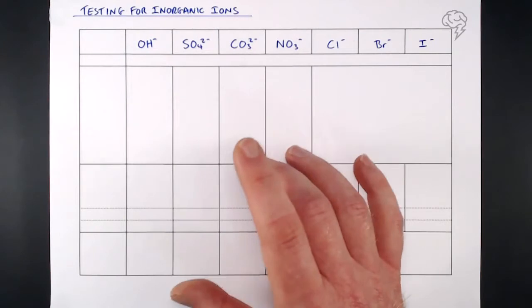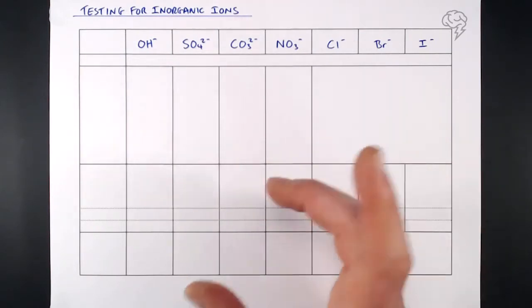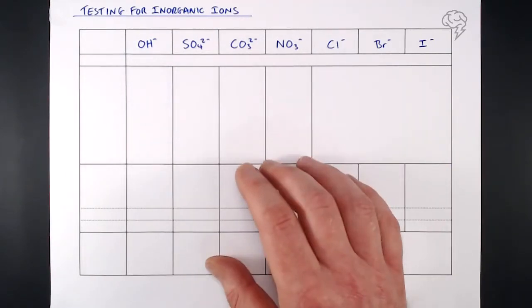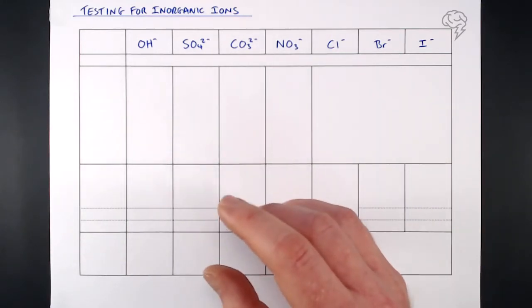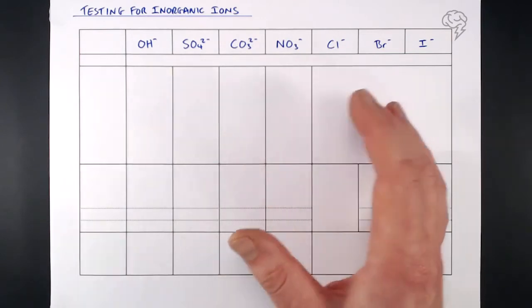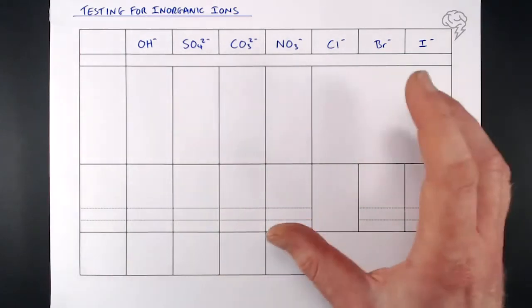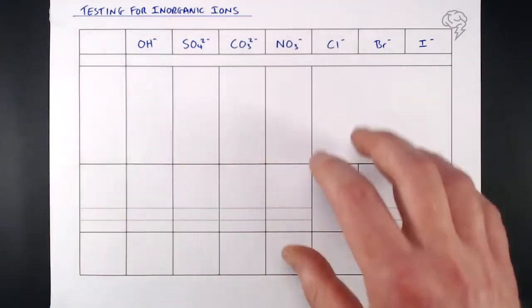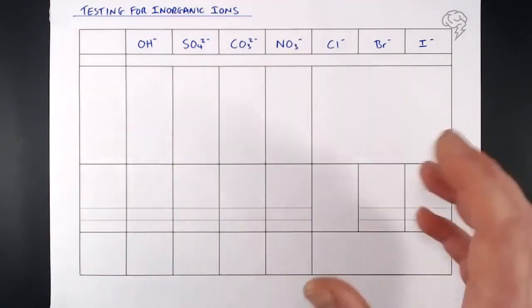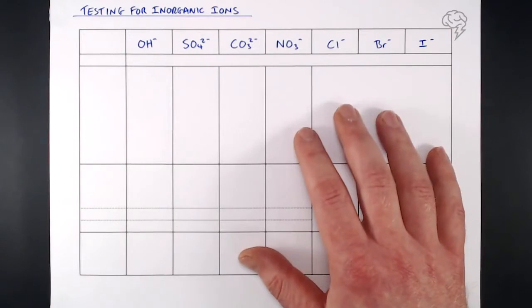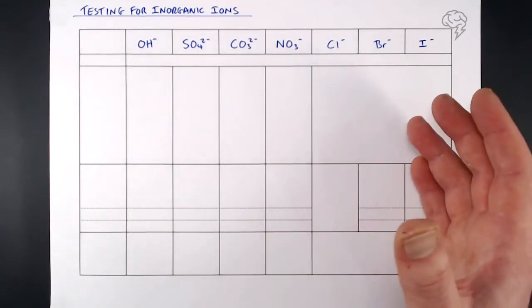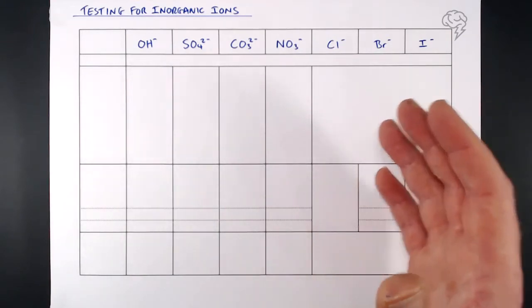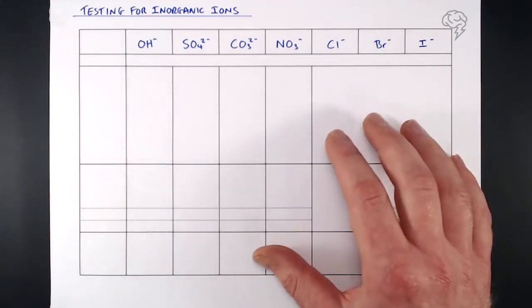When it comes to testing for inorganic ions — the little test tube tests we do for the presence of inorganic ions — it can be very confusing; it seems like there's a lot of information to take in. This table probably doesn't look like it's going to help at all right now, but hopefully by the time we fill it out, it's a one-stop reference. This would be something good to stick in the back of your folder while you're in school or college.